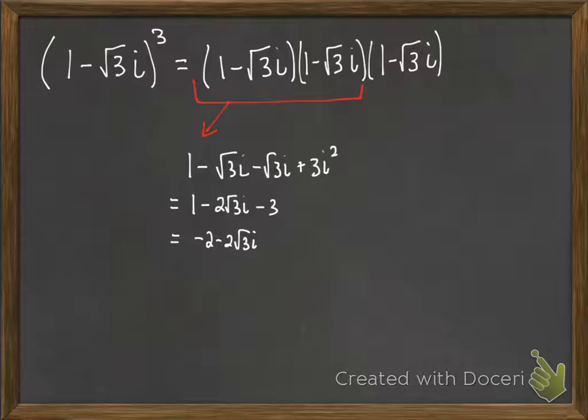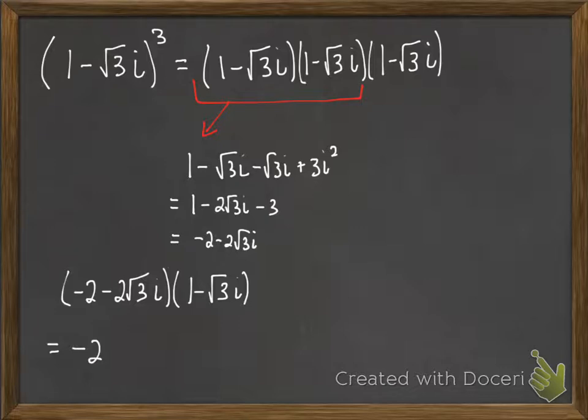And so now we're going to take that result, that was multiplying the first two, and we'll multiply that times the third factor there. And so we multiply again. Negative 2 and negative 1 will be negative 2. Negative 2 and square root of 3i will be plus 2 square roots of 3i. Negative 2 square roots of 3i and 1 will be minus 2 square roots of 3i.